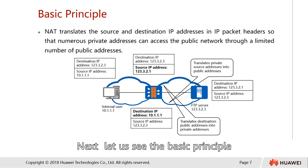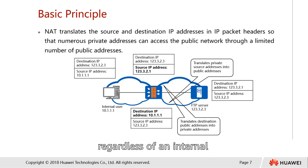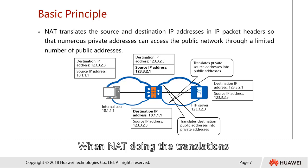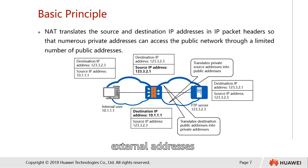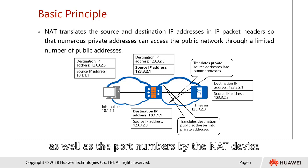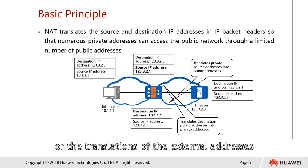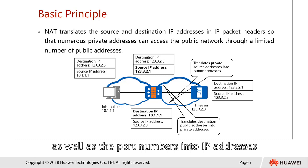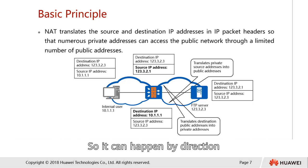Now let's look at the basic principle of NAT. NAT can perform two-way translations, regardless of whether it is from internal to external or external to internal. When NAT performs translations, the IP address and port number of an internal host can be translated into external addresses and port numbers, or external addresses and port numbers can be translated into the IP address and port number of an internal host. So it works in both directions.